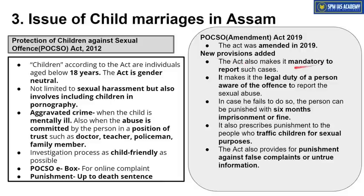The 2019 amendment makes it mandatory to report such cases. Agar aapko pata hai ki aapke aaspaas kisi bachche ke khilaf sexual offense ho raha hai aur aap usse report nahi karte, toh in that case you will also be counted as a person conducting a crime — that will also be a criminal offense. It makes it the legal duty of a person aware of the offense to report the sexual abuse; if he fails to do so, the person can be punished with six months of imprisonment or fine. The new amendment also prescribes punishment to people who traffic children for sexual purposes, and the act also provides for punishment against false complaints.